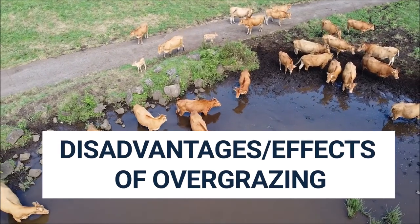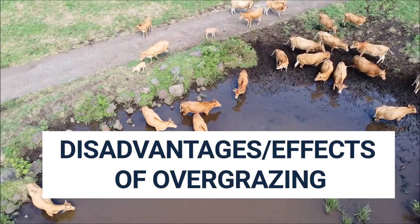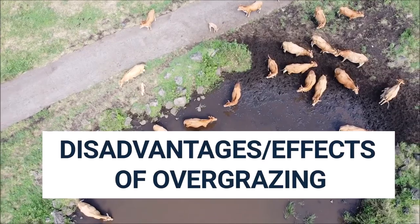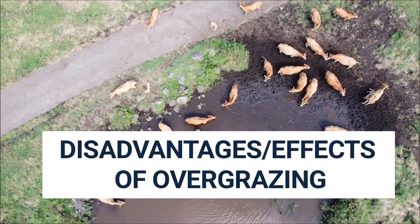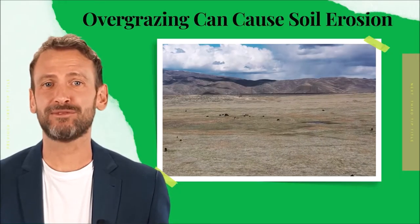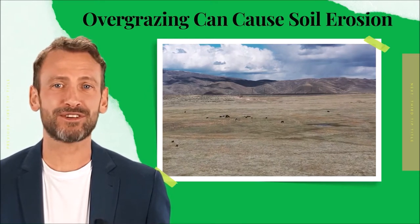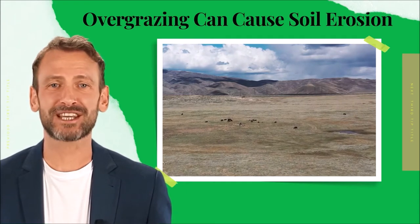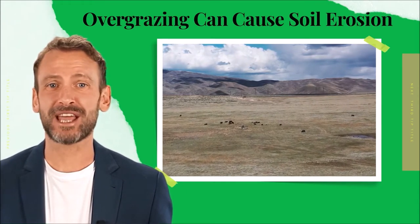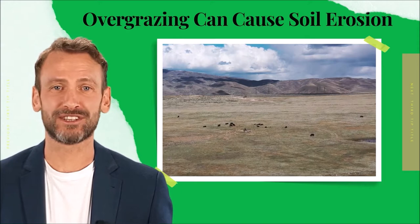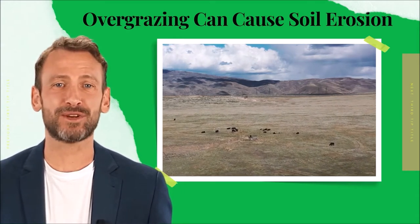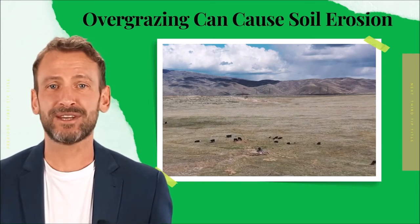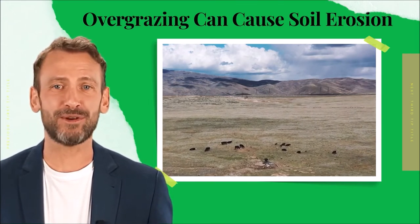Overgrazing is not good for the environment and the soil. It can lead to the degradation of habitats and the loss of plant species. Overgrazing is one of the main drivers of soil erosion in most parts of the world. Vegetation cover plays an essential role in preventing soil erosion. Grasses and other forage safeguard the soil against wind and splash erosion. When livestock overexploit the vegetation cover, the soil is left bare, leaving the land exposed to destructive elements.